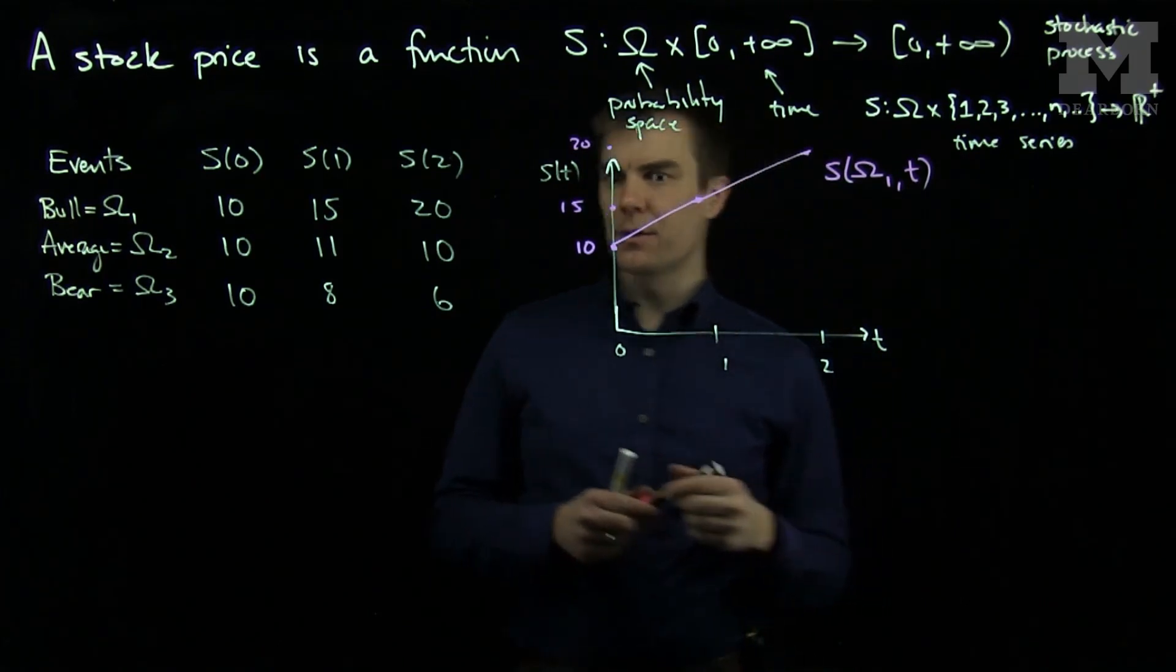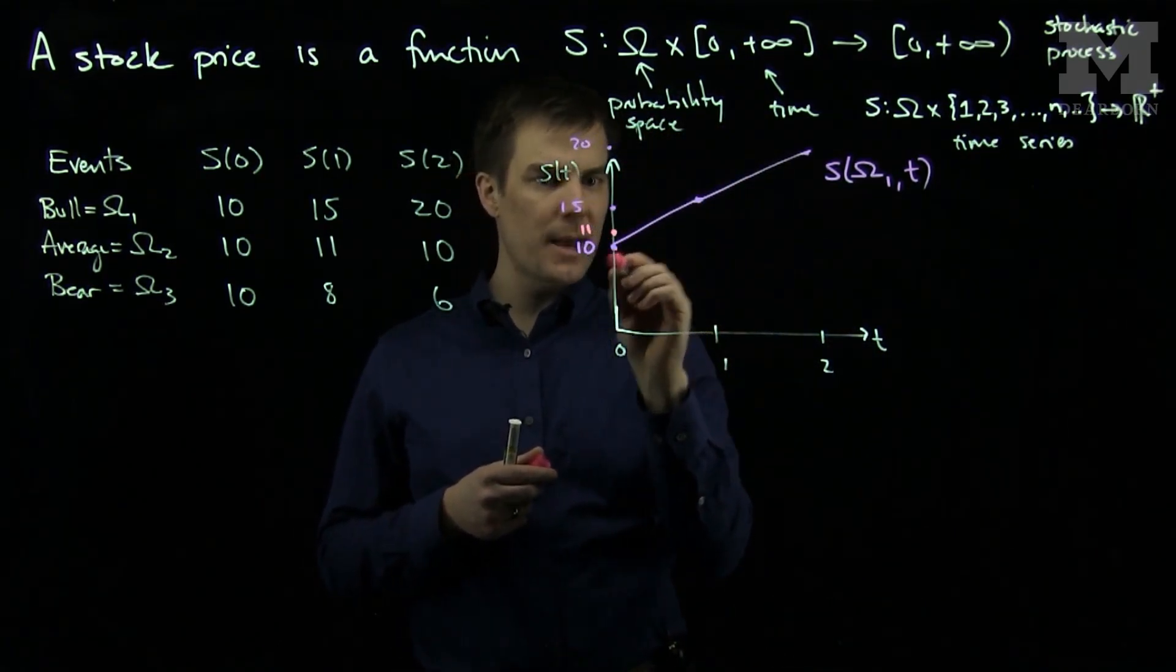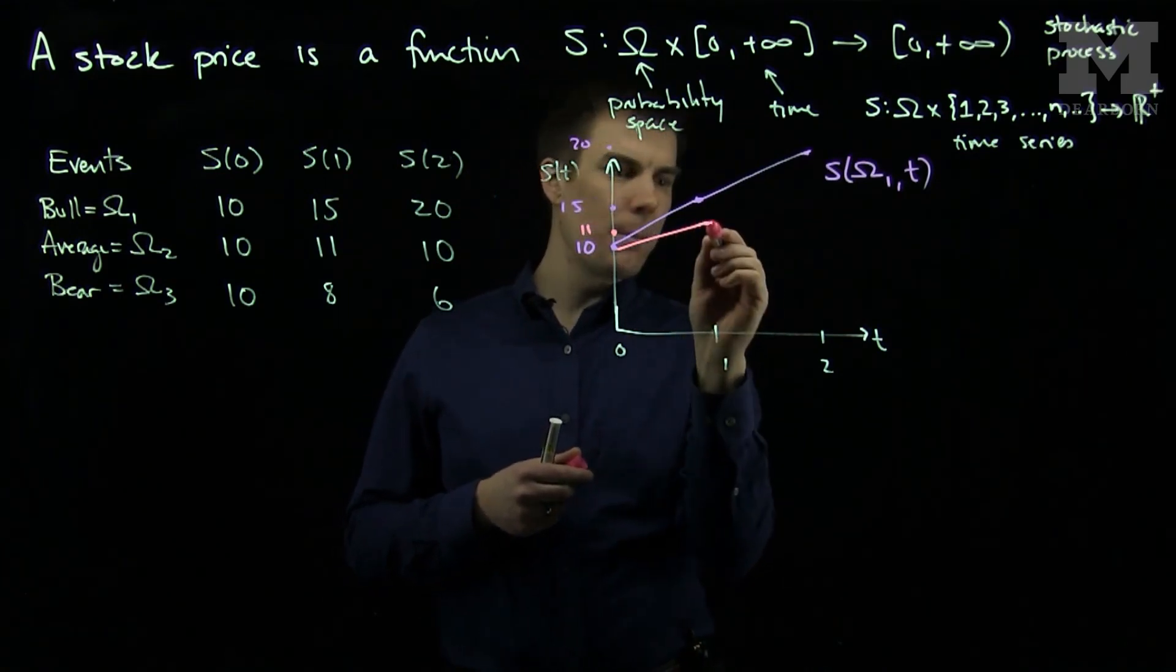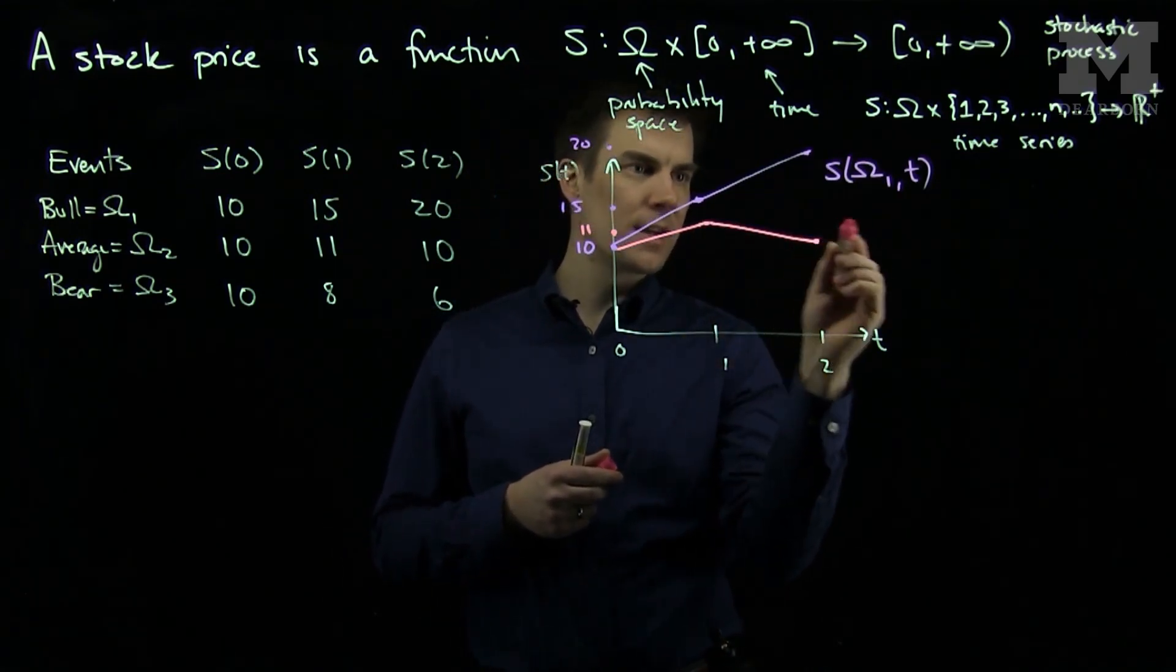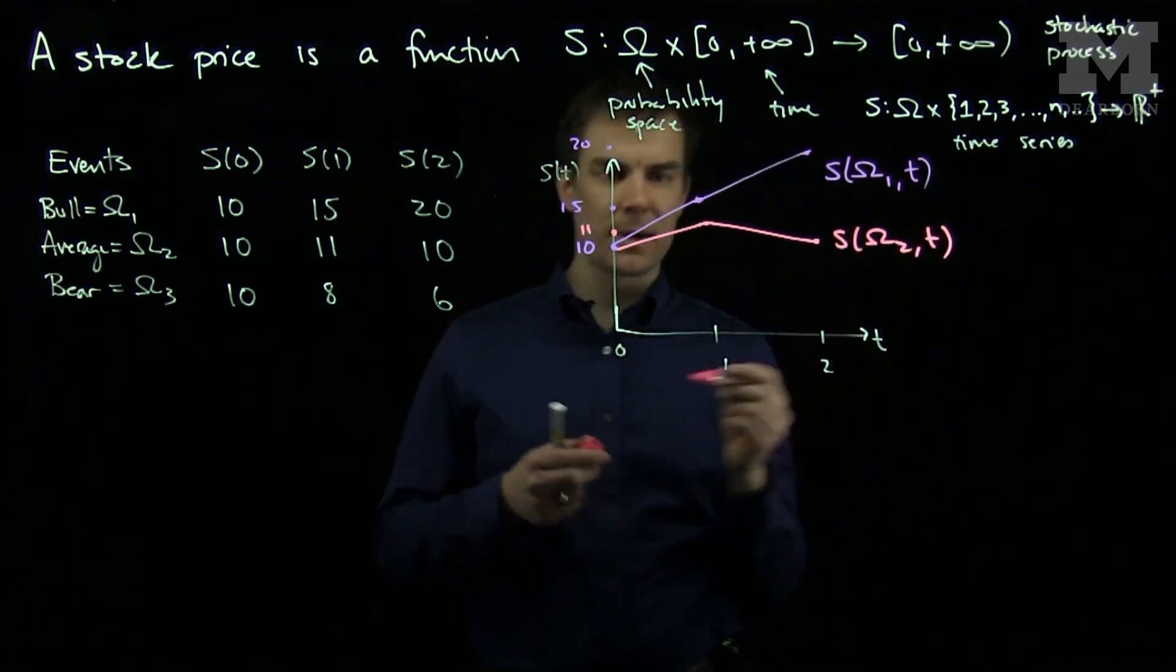Then I can consider the average path, which might go up just a little bit to 11. So this path will go up to 11 at time one, and then come back down to 10 at time two. This is S of omega two, the average market. That's my next sample path.